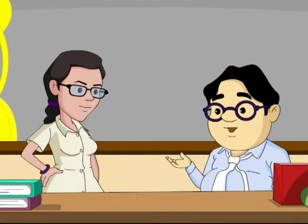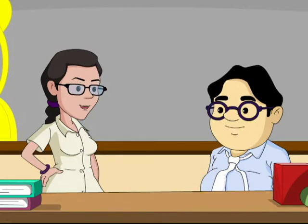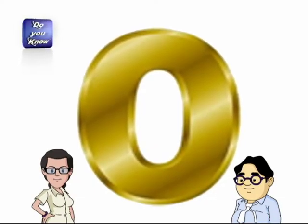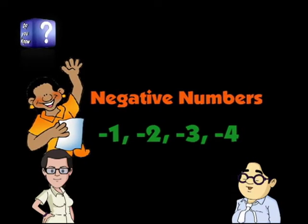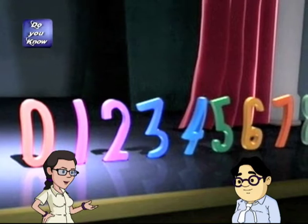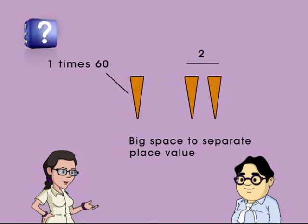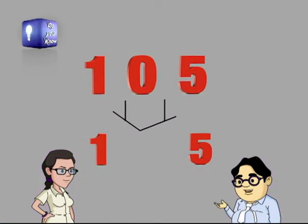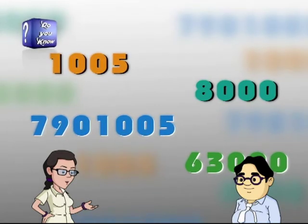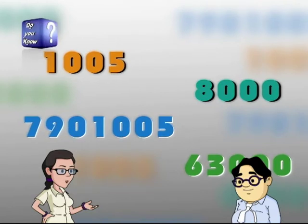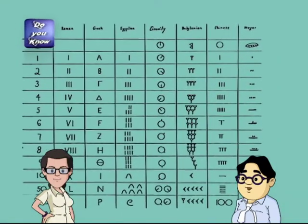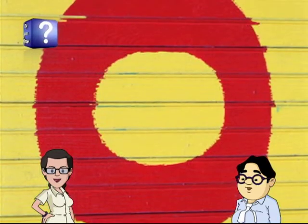In the Do You Know section: zero and negative numbers were first used around 300 BC, much later than numbers like 1, 2, 3. In the Babylonian system, 0 was represented by a space — so 105 would be written as 1 space 5. This became confusing when numbers had multiple zeros next to each other. About 1500 years later, Babylonians began using a special sign for 0, but only as a placeholder, never as an actual value.